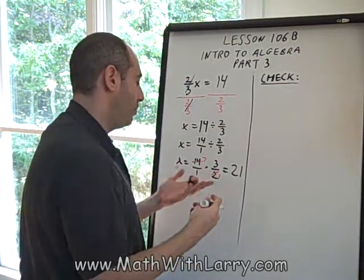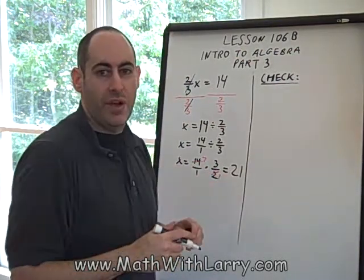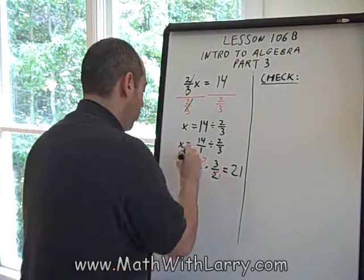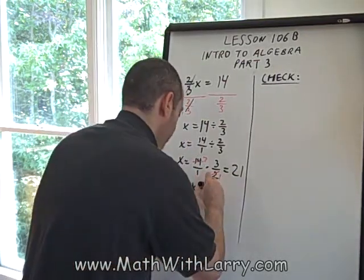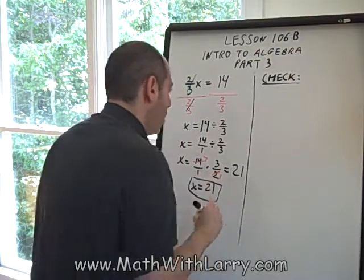And in the denominator, we just have one times one, which is one, and we don't have to bother to write that. So, what we got is x equals 21. Let's just write it clean.